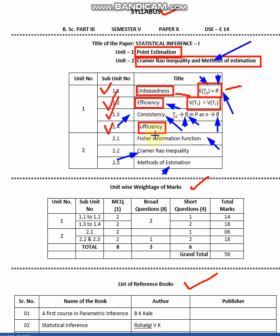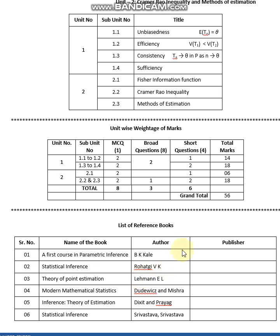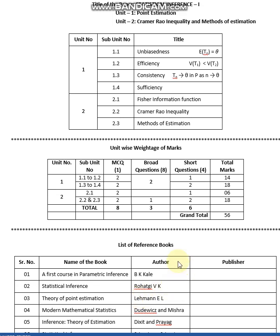Regarding the marking system, this course is of 56 marks: unit one is 32 marks and unit two is 24 marks. The reference books for this course include: A First Course in Parametric Inference by B.K. Kale, Statistical Inference by Rohatgi, Theory of Point Estimation by Lehmann, Modern Mathematical Statistics, Inference Theory of Estimation, and Statistical Inference by Srivastava and Srivastava. Since this is a core course in statistics, you should understand it very carefully.